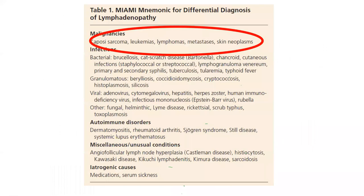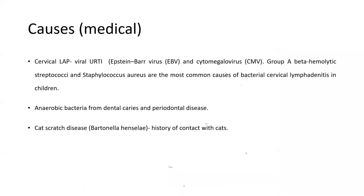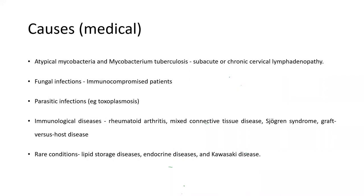There are many differential diagnoses for lymphadenopathy. The MIAMI mnemonic helps: M for malignancies, I for infections, A for autoimmune disorders, M for miscellaneous, and I for iatrogenic causes. Common causes of cervical lymphadenopathy include viral or bacterial cervical lymphadenitis, dental caries or periodontal disease causing anaerobic bacterial infection, cat scratch disease, and tuberculosis — the most common cause overall. In immunocompromised patients, consider fungal infections, parasitic infections, immunological diseases, lipid storage diseases, and endocrine diseases.